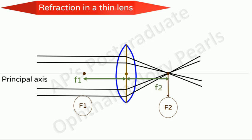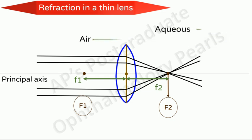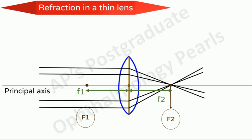Lenses are designated by their second focal length. Convex or converging lenses are sometimes called plus lenses and are marked with a plus. If the medium on either side of the lens is the same — for example, air — then the first and second focal lengths are equal. However, if the second medium differs from the first, then F1 will not be equal to F2.